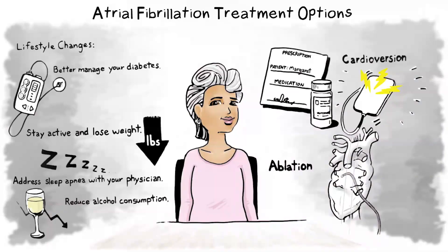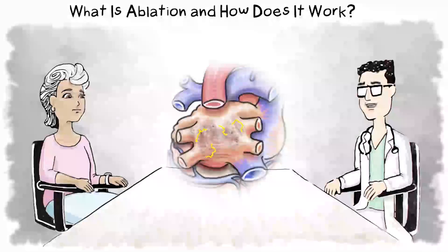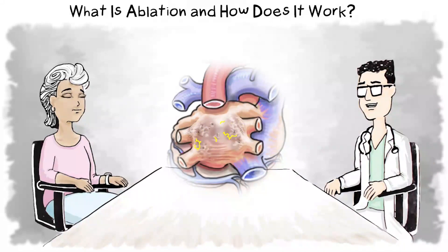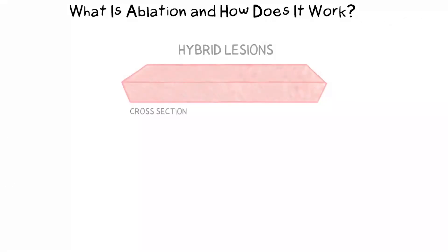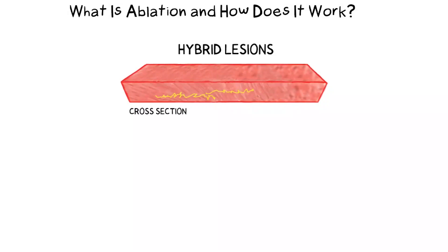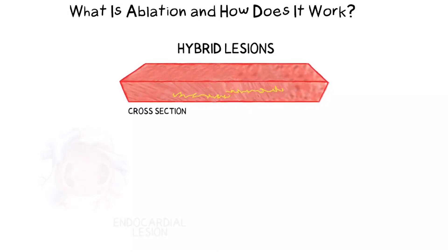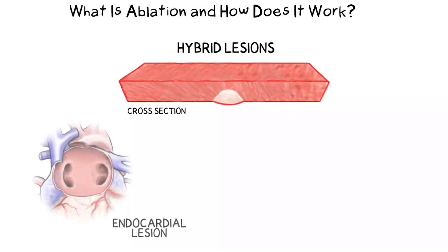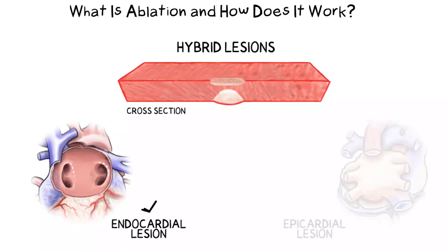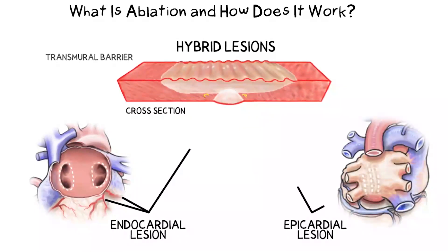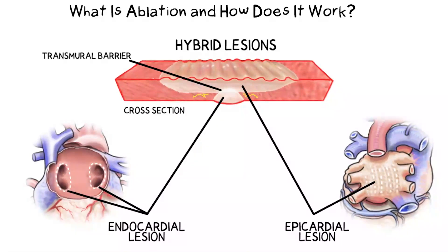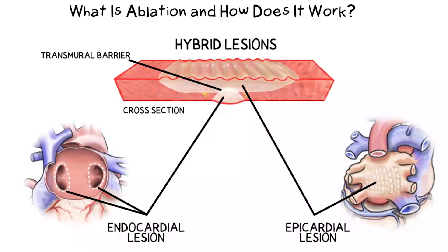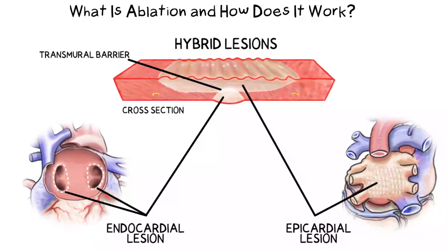Ablation can stop the erratic electrical signals that cause atrial fibrillation by forming lesions on the inside or outside of the heart. A lesion is a barrier that can eliminate the trigger areas for atrial fibrillation. Ideally, a lesion would be transmural — meaning all the way through the heart tissue. The more transmural the lesion, the more effective the barrier. If successful, these atrial fibrillation trigger points are eliminated.